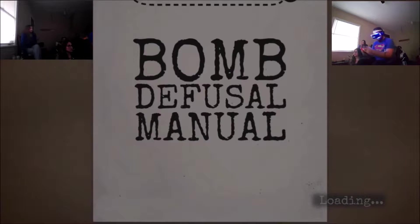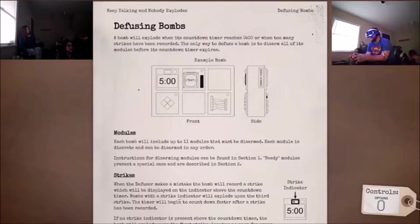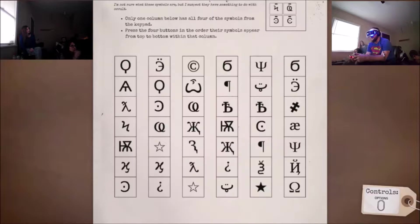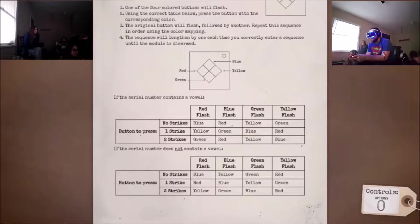Tell us what you see. It's dark. Fuck. Simon says, glyphs. Okay, Simon says. Simon says. Okay. Okay, how do we do this one? Okay. Red. Does the serial number contain a vowel?